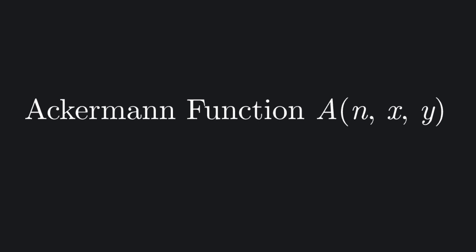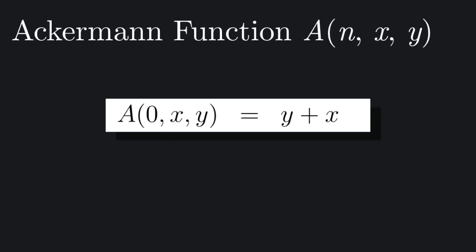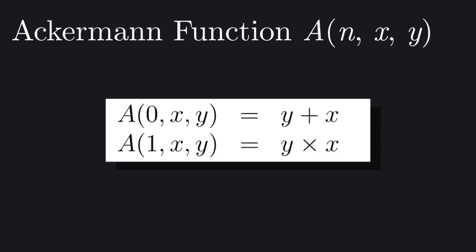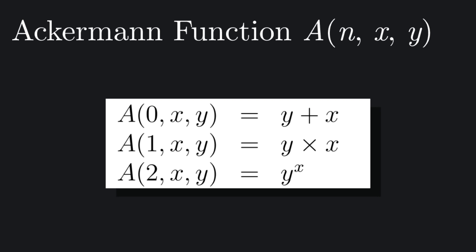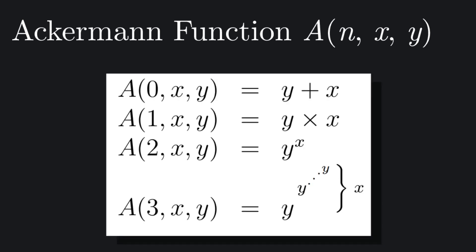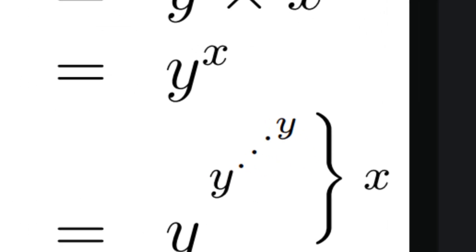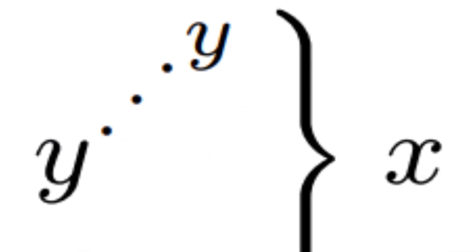This function, well, a version of this function, takes three integer inputs: n, x and y. When n is 0, the function returns y plus x. When it is 1, it returns y times x. When it is 2, it returns y to the x. When it is 3, it returns y to the power of y, to the power of y, to the power of y, and so on, and so on, and so on, x times.